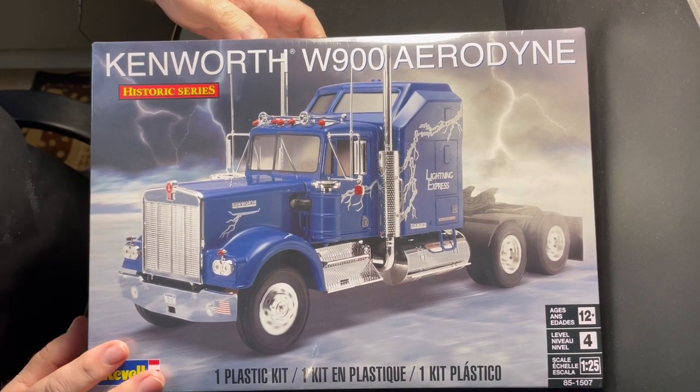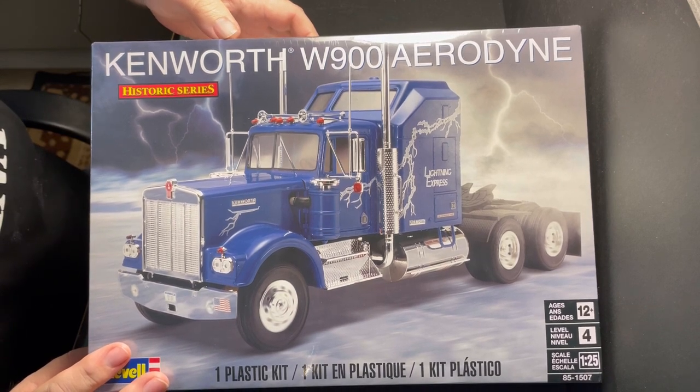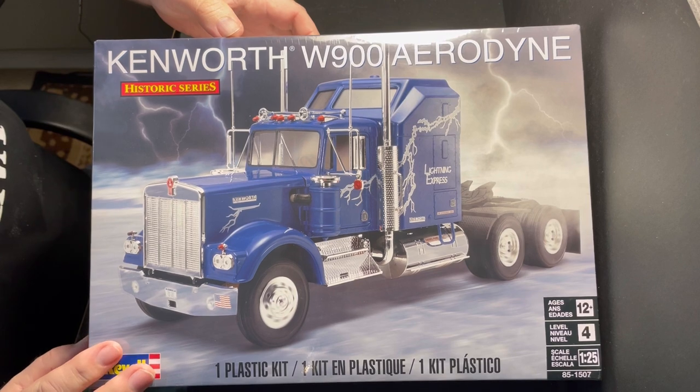I'm going to review this one here - it's the Revell Kenworth W900 Aerodyne. They did a week of truck kits and we got these for like 39.95 in Australia. That's really cheap for a model kit, especially a truck kit.